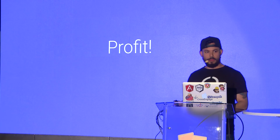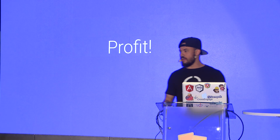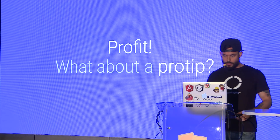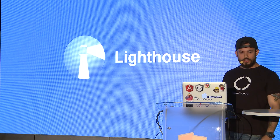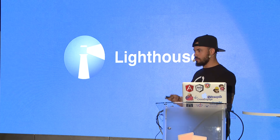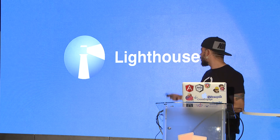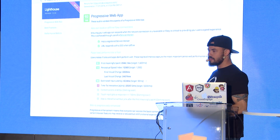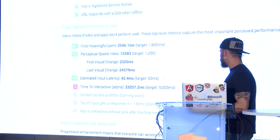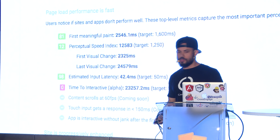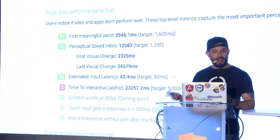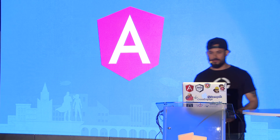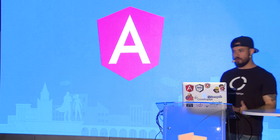Now we have a progressive web app. You might be wondering: can I do this with my existing apps? Definitely — it's up to you and it's pretty easy. There's also a tool called Lighthouse, used to audit your progressive web apps. It's available as a Chrome extension or a CLI application. It gives you insights like time to interactive, so you can make sure you provide a nice, app-like experience for your users.